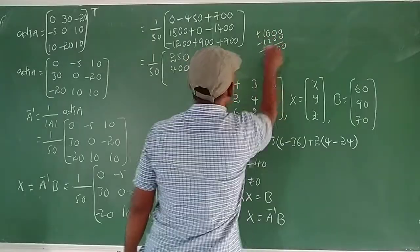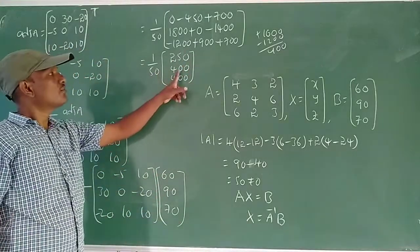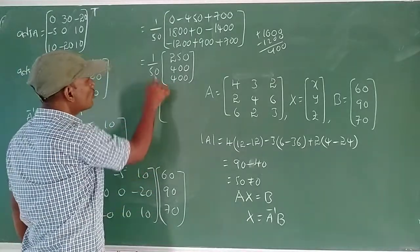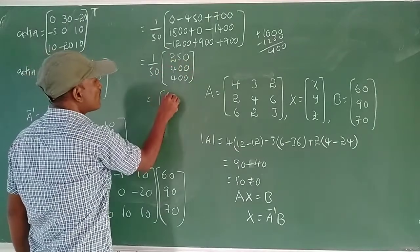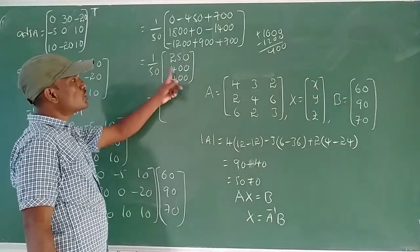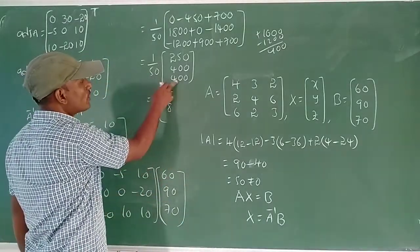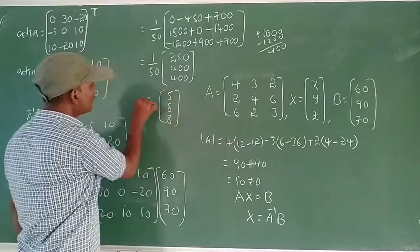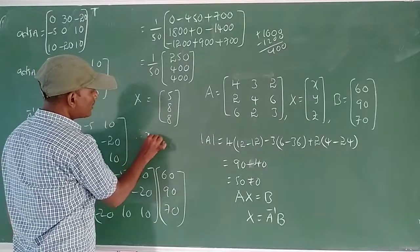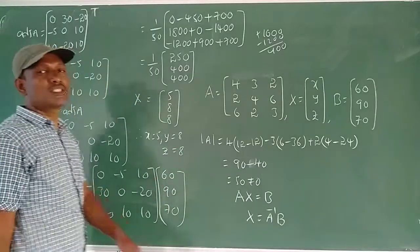Dividing each by 50: 250 ÷ 50 = 5, 400 ÷ 50 = 8, 400 ÷ 50 = 8. So capital X = [5; 8; 8]. Therefore X = 5, Y = 8, Z = 8.